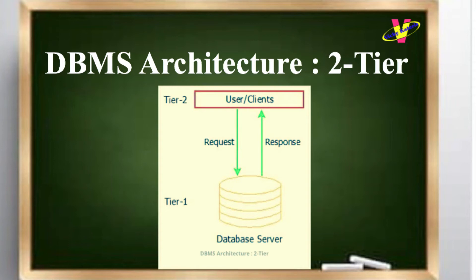The two-tier architecture of DBMS consists of two tiers: tier one being the database server and tier two being the users or clients of the application. In this type of DBMS architecture, users of the software application deal with the database software and can find responses to the requests made by them. The user cannot manipulate the data inside the database without permission. Client-server architecture can be a possible example of two-tier DBMS architecture.